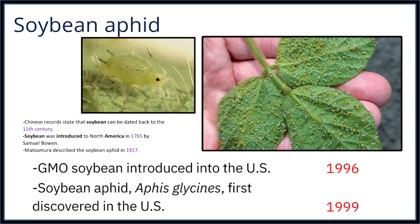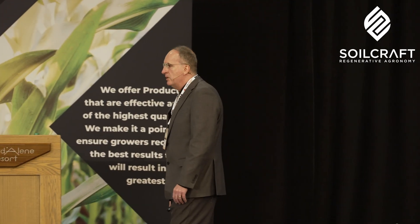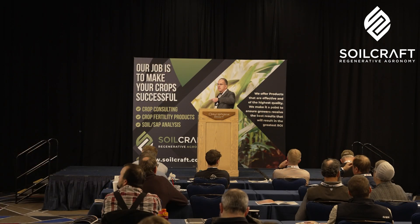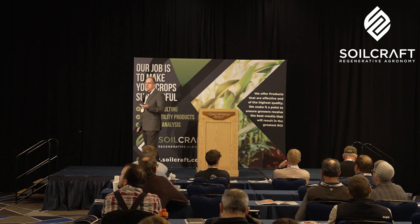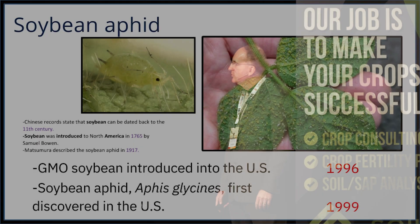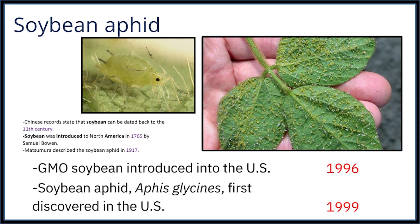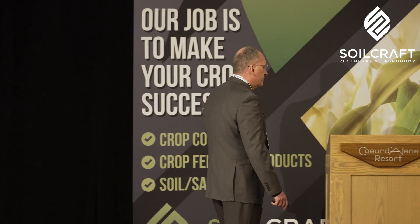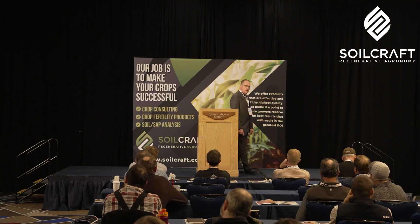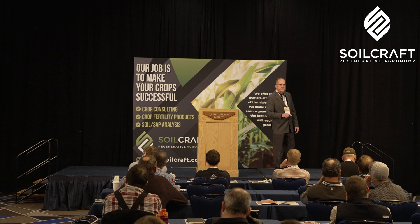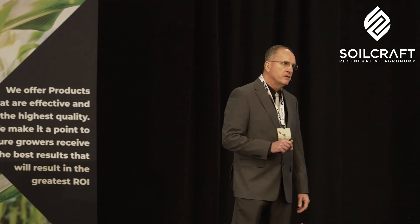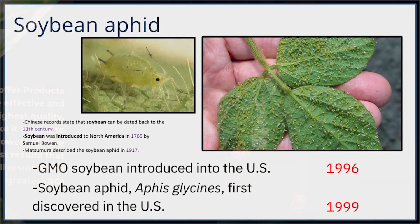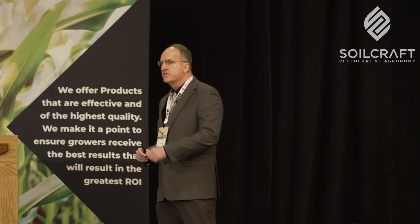Matt Samura described the soybean aphid in 1917, meaning the soybean aphid has been known since before 1917, but no one knew what it was — Matt Samura did. It was a relative unknown. GMO soybean was introduced into the U.S. in 1996, and right behind that, the soybean aphid — Aphis glycines — was first discovered in 1999. GMO soybean is the main reason why we have the soybean aphid. The low BRIX levels of the GMO soybean leaf are actively gone after, and you can see the number of soybean aphids on the underside of the leaf. This is the reason why we have it.